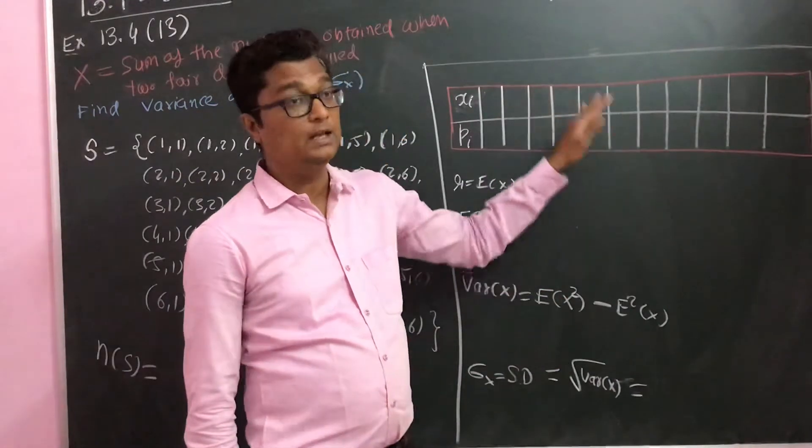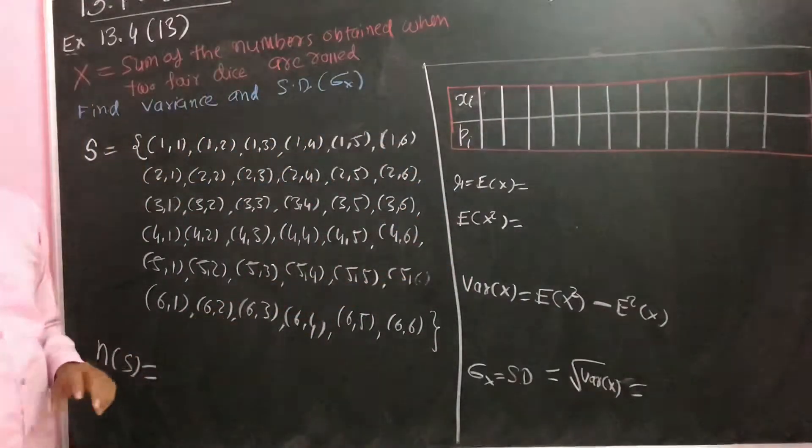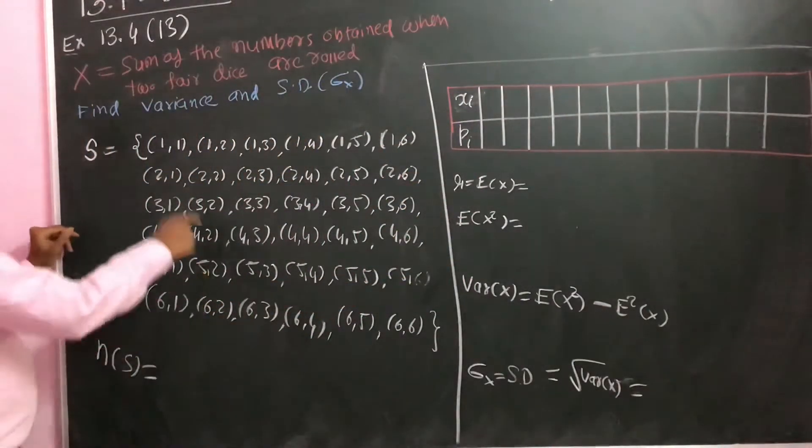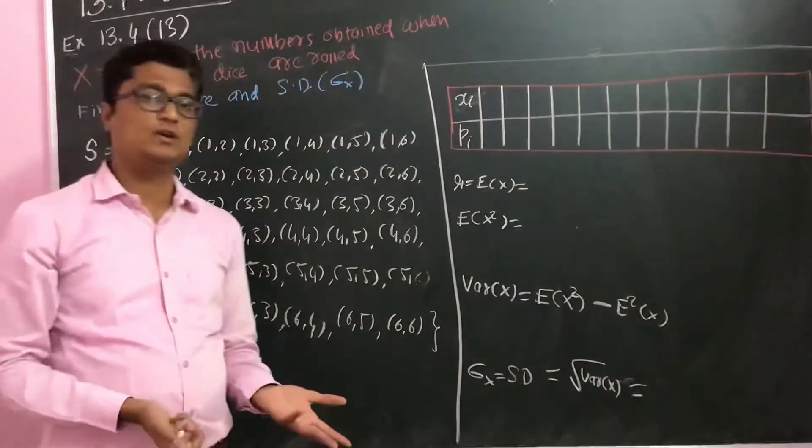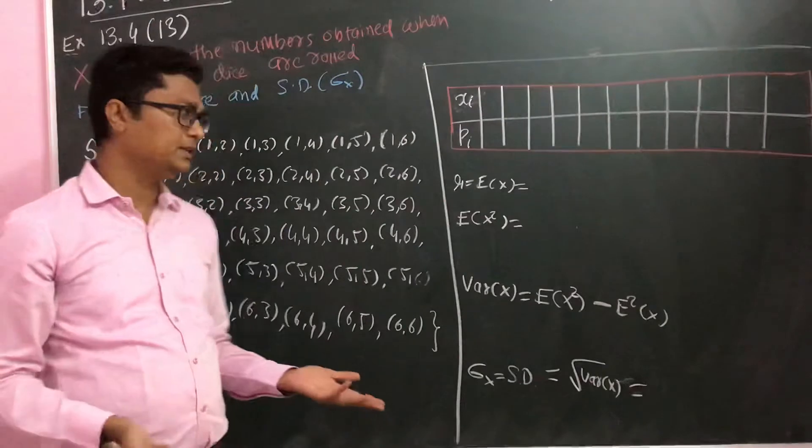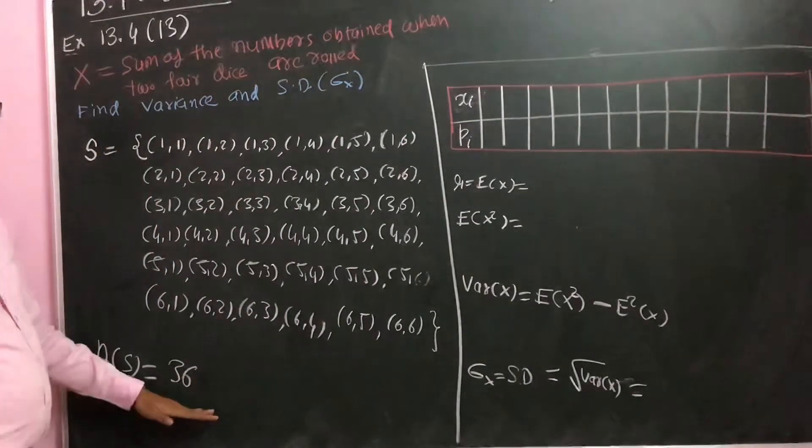To find E of X, we have to find the probability distribution. And to find the PD, you should know the sample space. If two dice are rolled, there are 36 combinations. So number of sample space is 36.